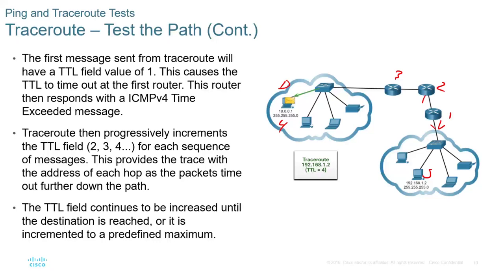One thing to note is that just because traceroute fails at one point doesn't mean the next router will also fail. For example, if Router 2 is configured not to respond to traceroute or any ICMP, you'll get a failure at Router 2 but then Router 3 will respond. That tells you that you can still make it through the path — that one device is simply configured by the administrator not to respond to ICMP.